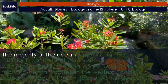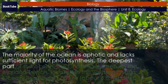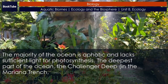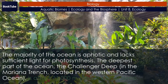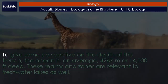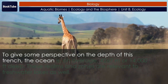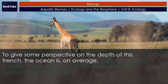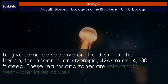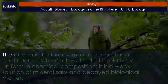The majority of the ocean is aphotic and lacks sufficient light for photosynthesis. The deepest part of the ocean, the Challenger Deep in the Mariana Trench, located in the western Pacific Ocean, is about 11,000 meters — about 6.8 miles deep. To give some perspective, the ocean is on average 4,267 meters or 14,000 feet deep. These realms and zones are relevant to freshwater lakes as well.